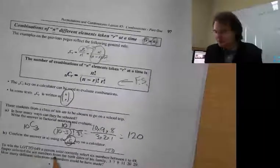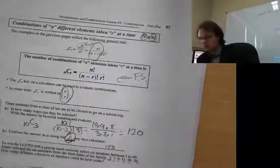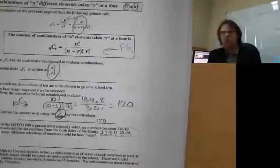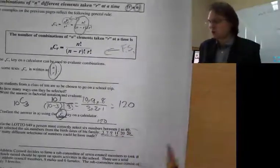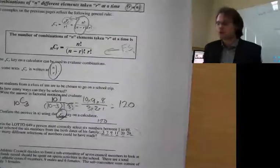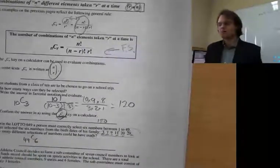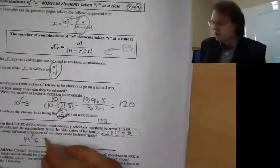Now we're looking at Lotto 649. A person must correctly select six numbers between 1 and 49. Jasper selected six numbers from the birth dates of his family. How many different selections of numbers could he have made? From 1 to 49 we have a total of 49 numbers, so out of 49 we are choosing 6.